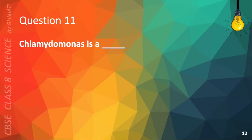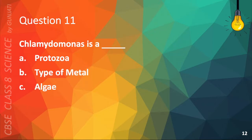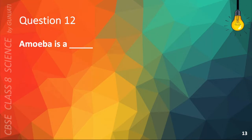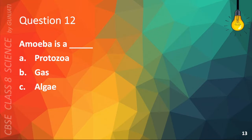Question 11. Chlamydomonas is: A. Protozoa, B. Type of Metal, C. Algae, or D. Type of Plant. The correct answer is C. Algae. Question 12. Amoeba is: A. Protozoa, B. Gas, C. Algae, or D. Liquid. The correct answer is A. Protozoa.